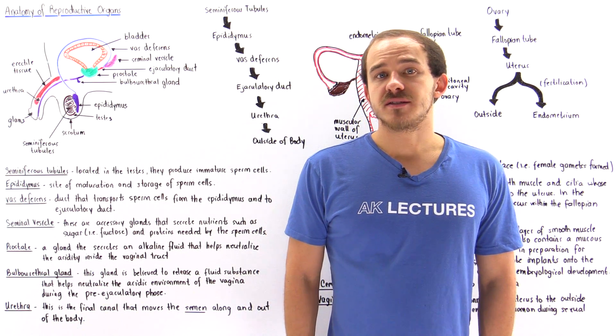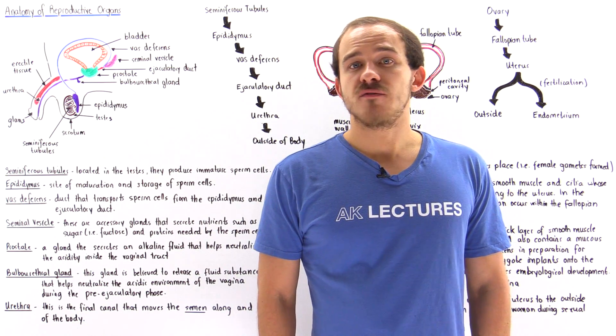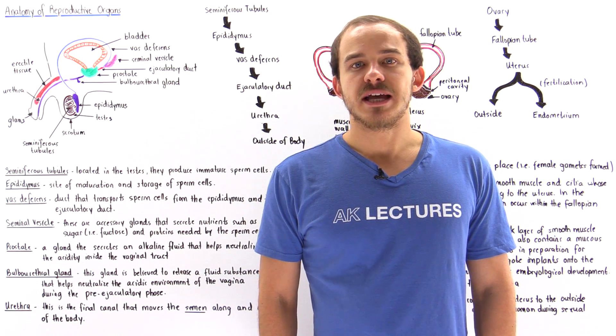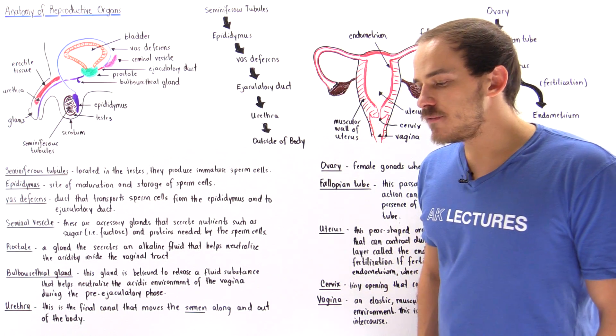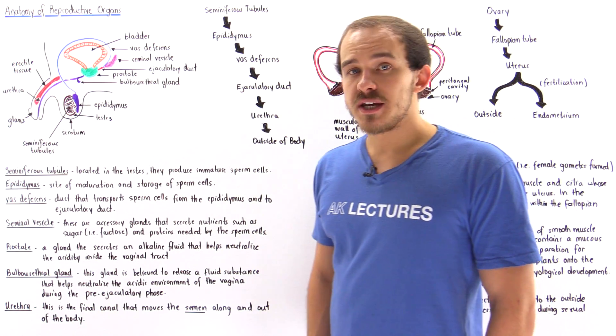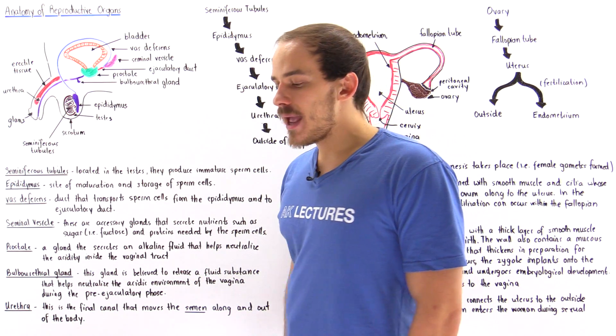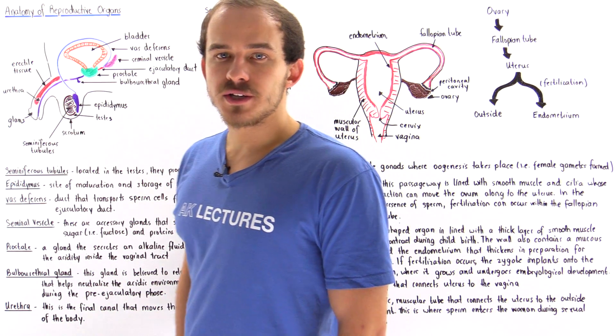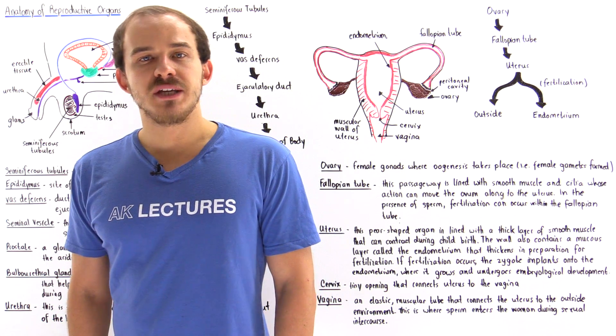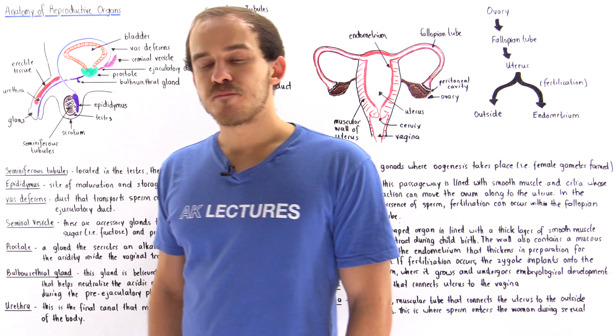Now that we discussed the processes of oogenesis and spermatogenesis, let's briefly focus on the anatomy of the male and the female reproductive organs. Let's begin with the male.